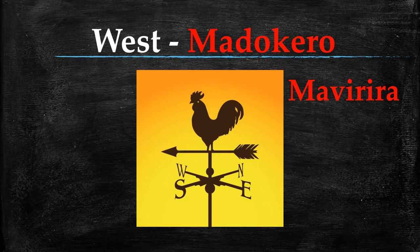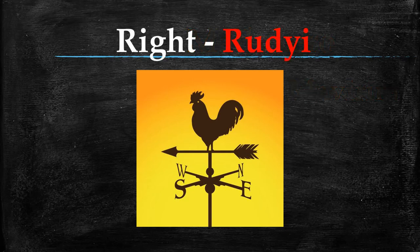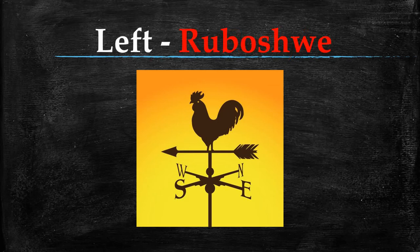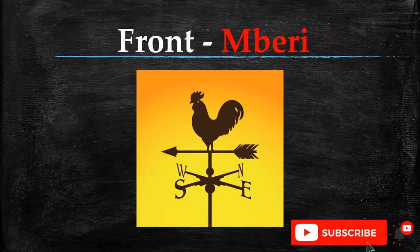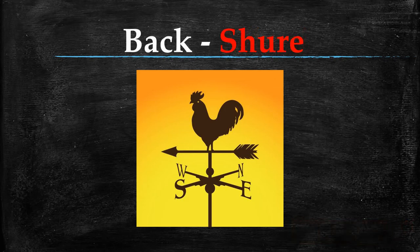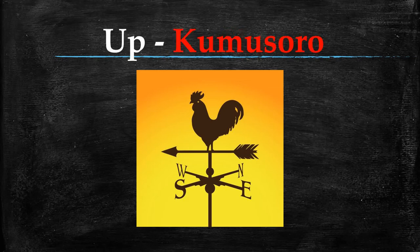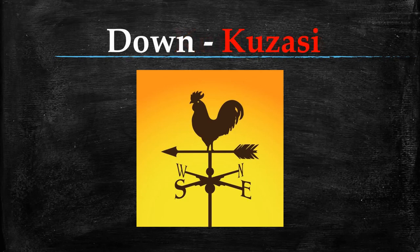Those are the four directions. But I'll give you extra words, extra nouns that we use for directions. The right hand side is called Rujgi. Left is Ruboshkwe. Front is Mberi. Back is Shure. Up is Kumsoro. Down is Kuzasi.